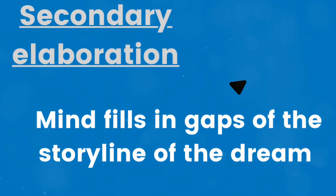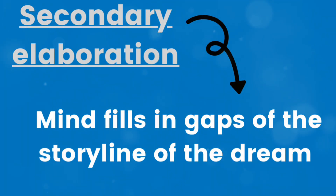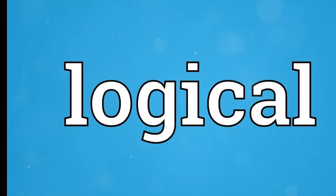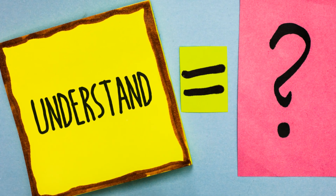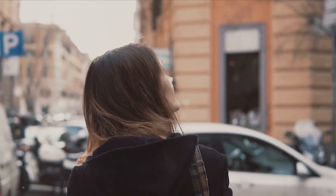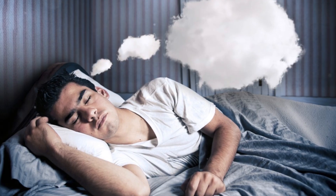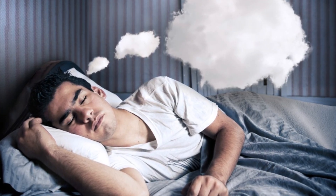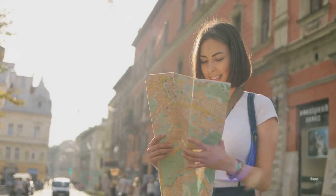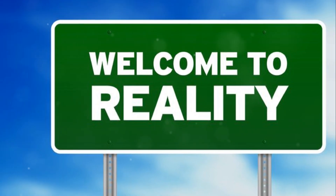Secondary elaboration. This is when, upon waking, the mind fills in gaps or smooths out the storyline of the dream to make it more logical and coherent. Essentially, it's a way of making sense of a dream after it's over. For example, someone might dream of being lost, but in the process of recalling the dream, they add details like specific streets or landmarks to make it feel more realistic.